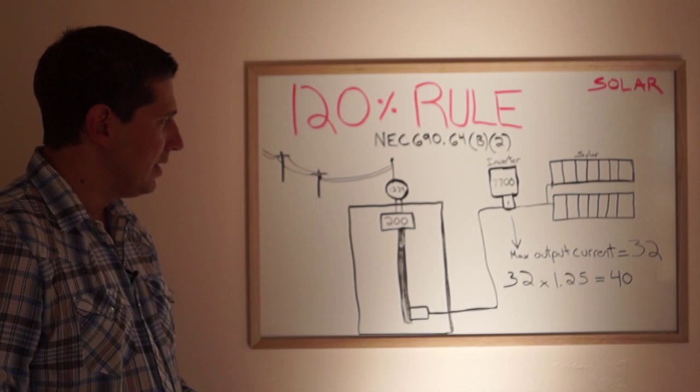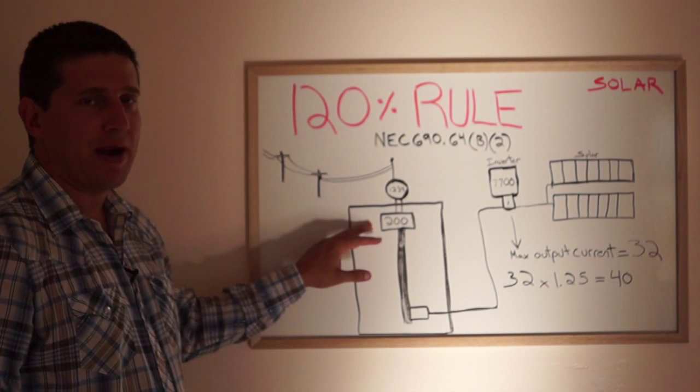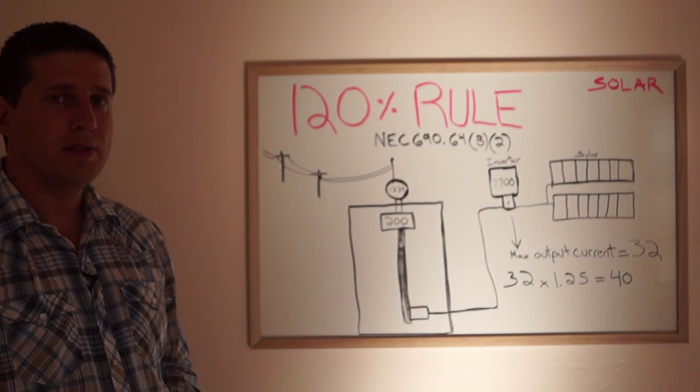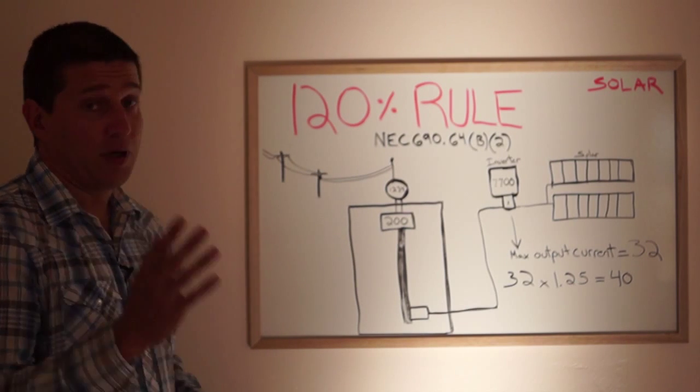And what that means is that breaker will not allow more than 200 amps to enter into the electric panel before it trips.